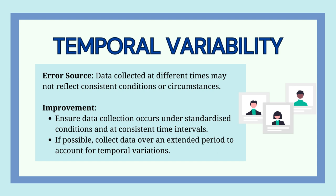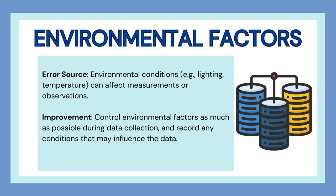Temporal variability occurs when data is collected at different times by different people, which will not reflect consistent results or conditions. Improvements include ensuring data collection occurs under standardized conditions and at consistent time intervals, and if possible, collecting data over an extended period to account for temporal variation. Environmental factors such as lighting, temperature, and weather can also affect measurements or observations. You need to control environmental factors as much as possible during data collection and record any conditions that may influence your data.